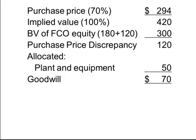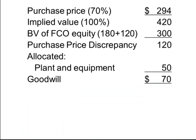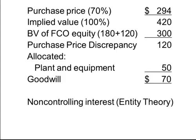When it comes time for PICO to consolidate EFCO, it will report 100% of the revenues, expenses, assets, and liabilities. The rationale is that Parent Corporation controls all of EFCO even though it's only entitled to 70% of its income. But in order for it to report all of the results of EFCO, we need to set up an offsetting credit to represent the 30% entitlement that has been retained by EFCO's previous owners.